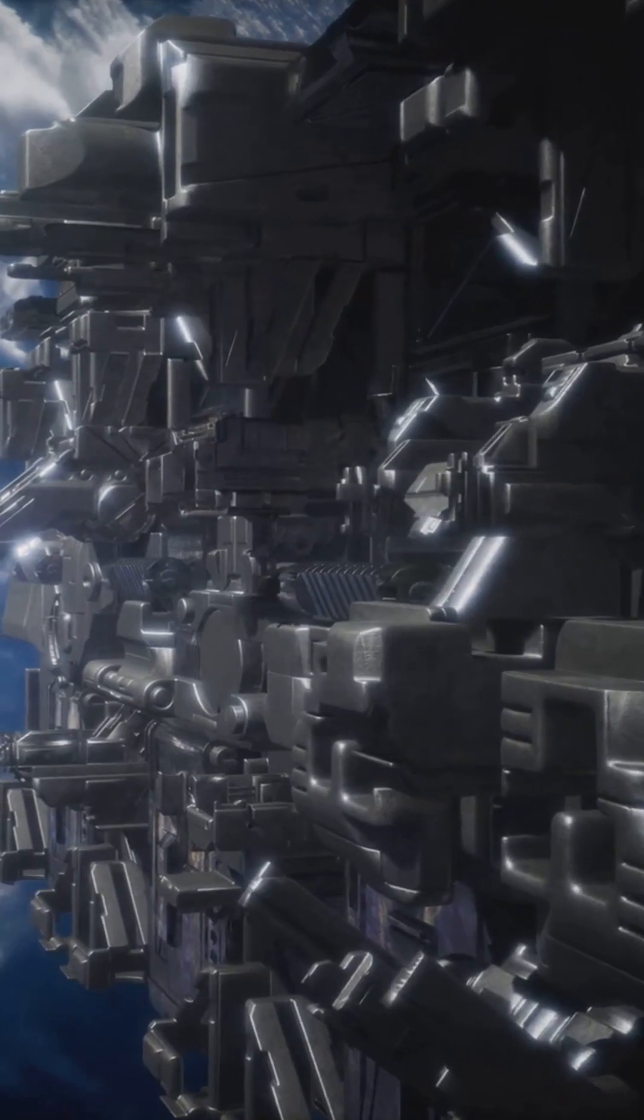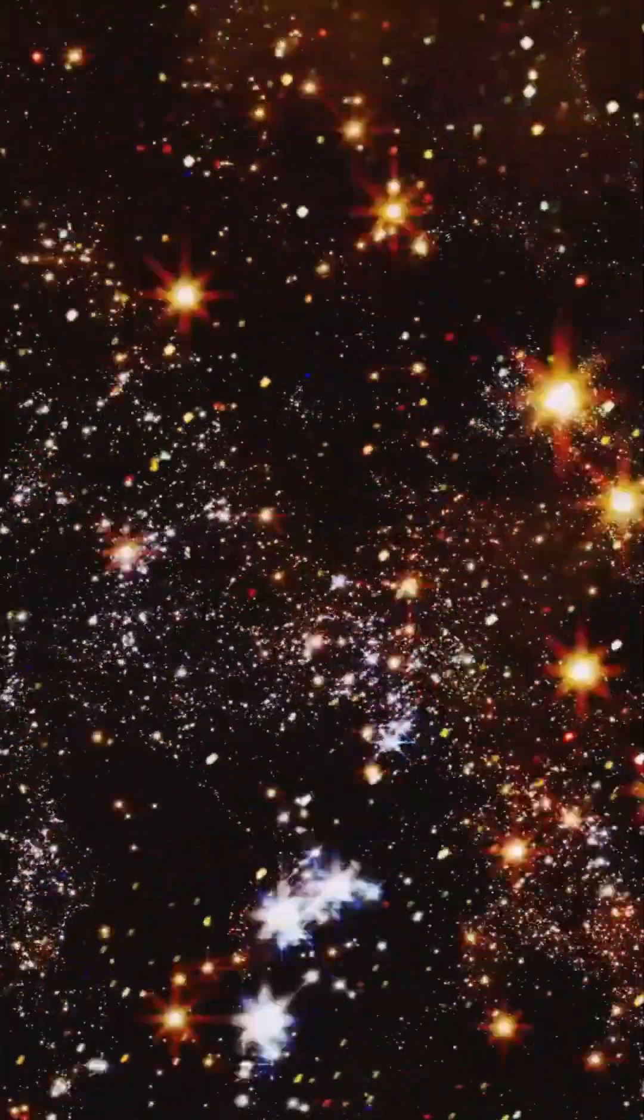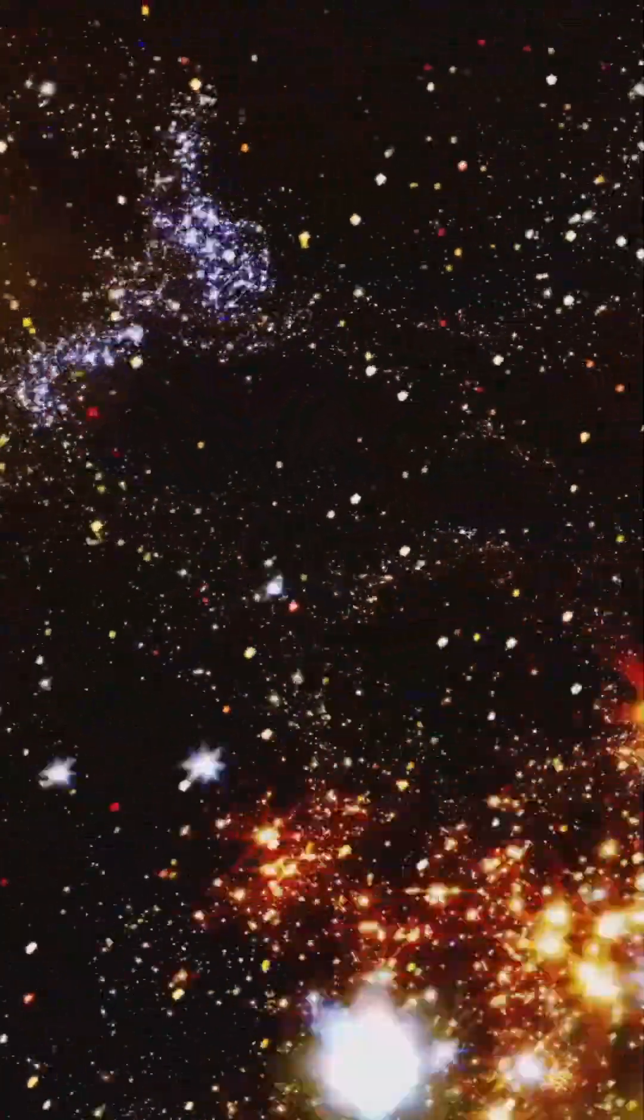Next, space itself gets squished in front of you and stretched out behind you. Stars ahead turn blue, while those behind turn red. It's called Doppler shift.